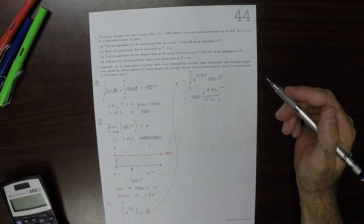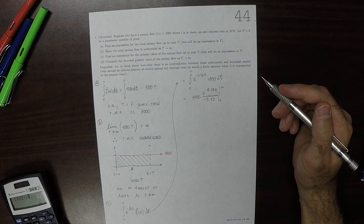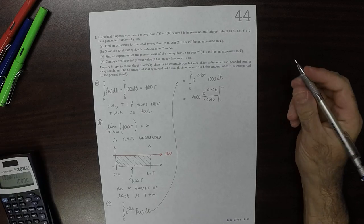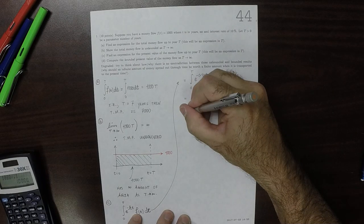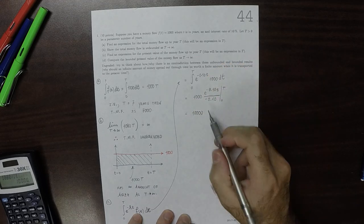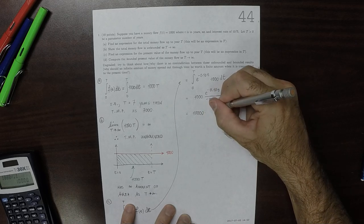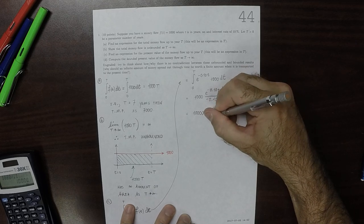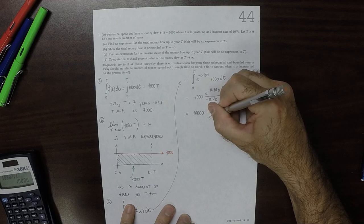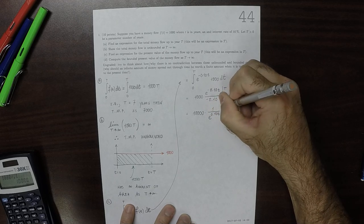So dividing by 0.10 gives you 1,000 by that, gives you 10,000. So that's 10,000. And then I'll spend this negative to reverse the order of evaluation, and get 1 over exponential 0.10 little t, and then from big T to zero.